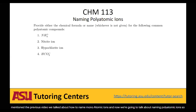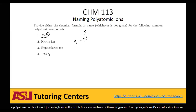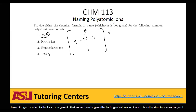A polyatomic ion is not just a single atom. In this first case, we have both a nitrogen and four hydrogens — it's a structure. We have nitrogen bonded to the four hydrogens, and that entire structure has a charge of plus one. So you have the nitrogen with the hydrogens all around it, and this entire structure has a charge of plus one. That's what a polyatomic ion is.